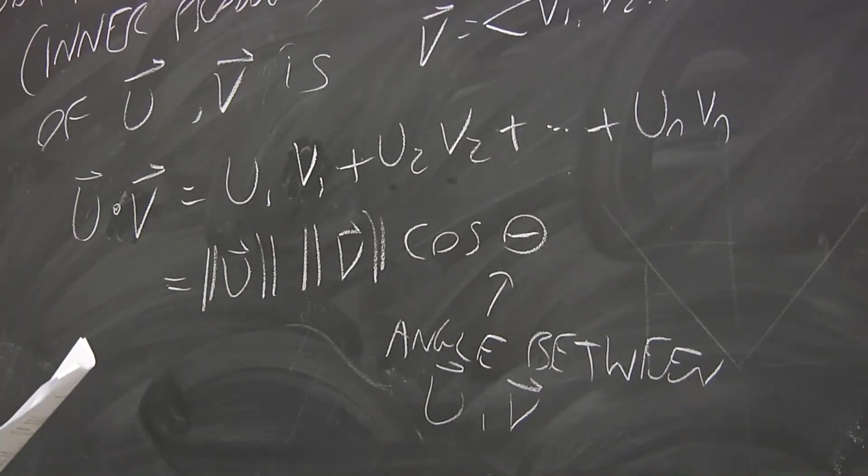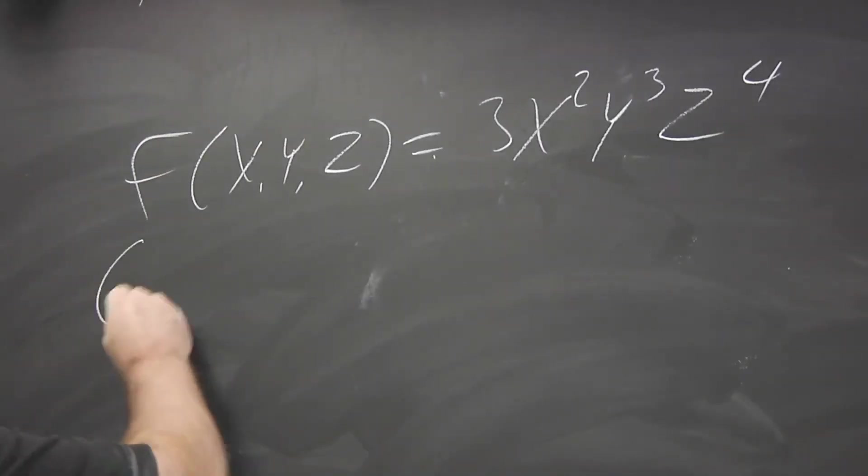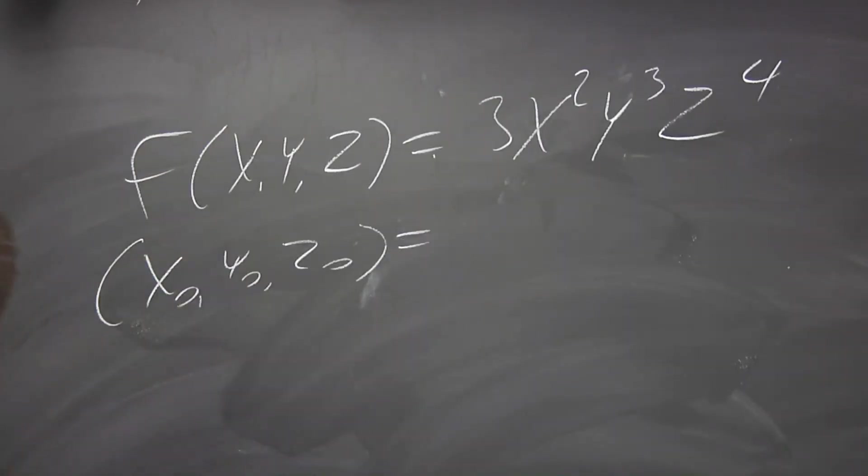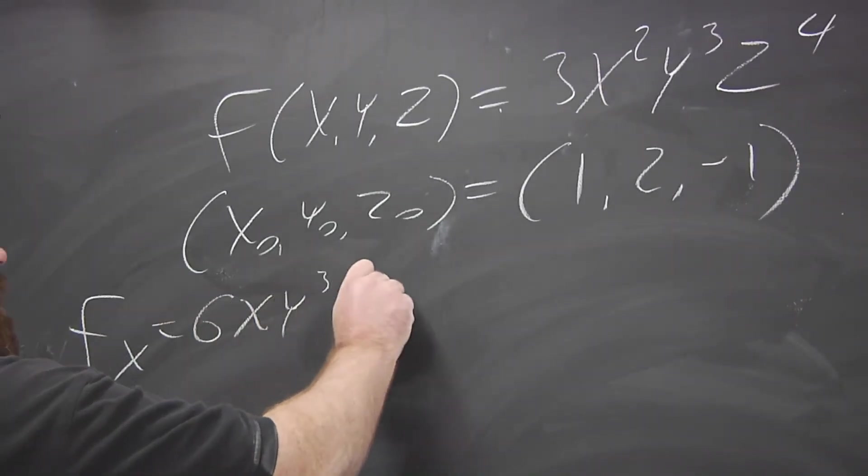So let's look at an example of this for a function of three variables. So we're going to take this function and we're going to linearize it around this point. First, we need to compute its gradient at that point, which means we're just going to compute all of the partial derivatives. So what's the partial derivative with respect to x?